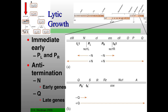So we started out way back when talking about Lambda. The big picture with Lambda is that we have these two different ways of growing: lytic replication and lysogenic replication. It's really all about transcriptional regulation, which determines whether it is going to replicate lytically or lysogenically. The main thing is these two promoters, PL and PR — if you get transcription from PL and PR, eventually this will end up leading to lysis.